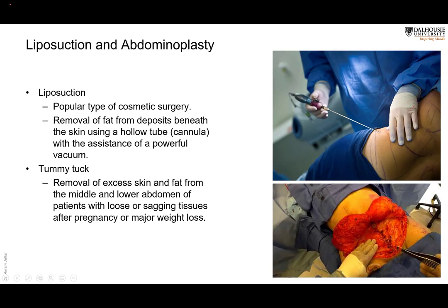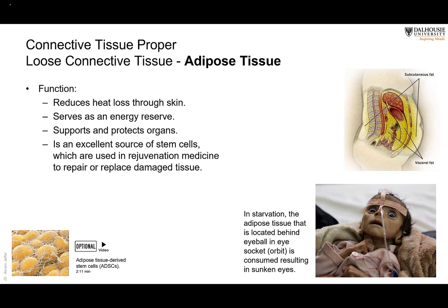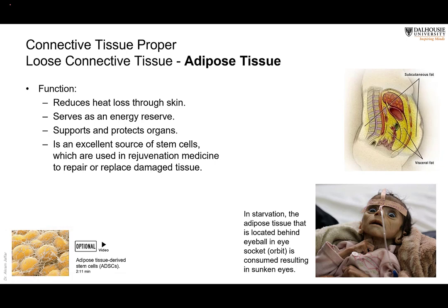Adipose tissue is present under the skin, which is the basis for surgical procedures like liposuction and abdominoplasty. It is also present around the viscera for protection and energy storage. In starved individuals, the fat that protects the eyeball is lost, resulting in sunken eyes. Current research also explores using adipose cells as a source of stem cells for repairing or replacing damaged tissue.